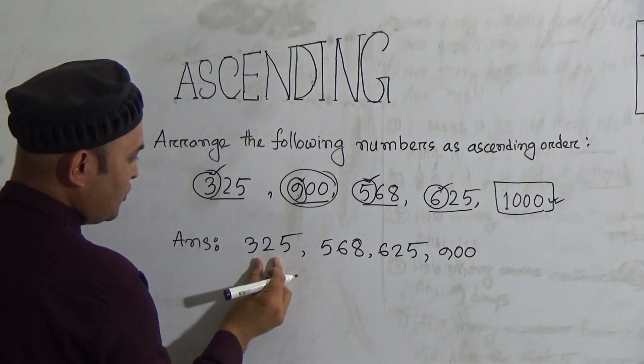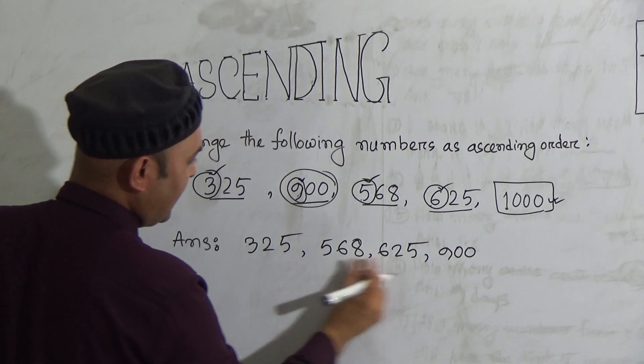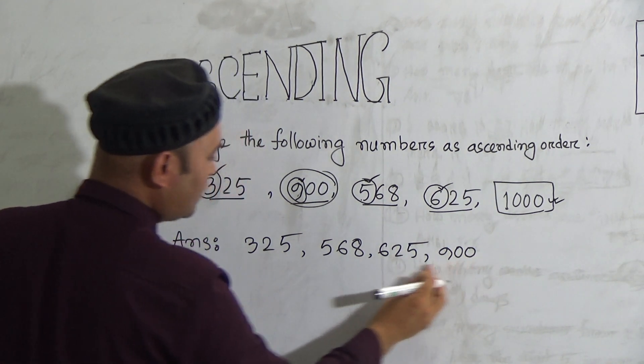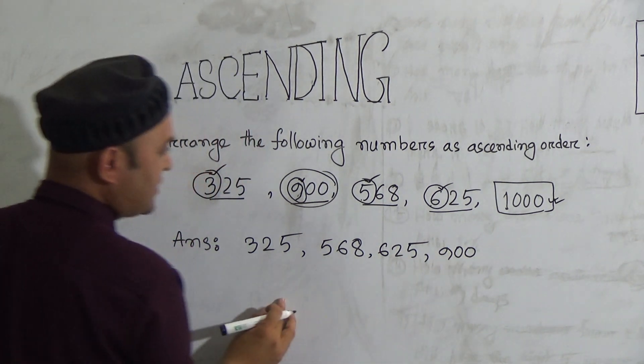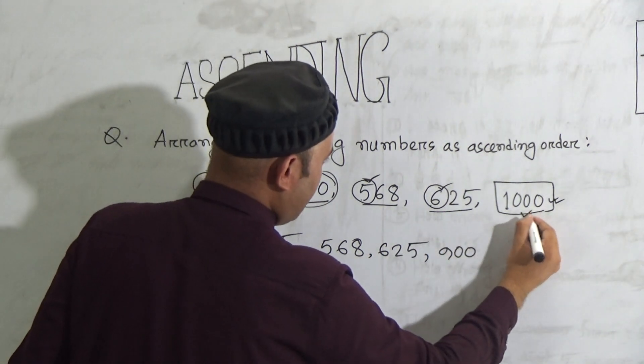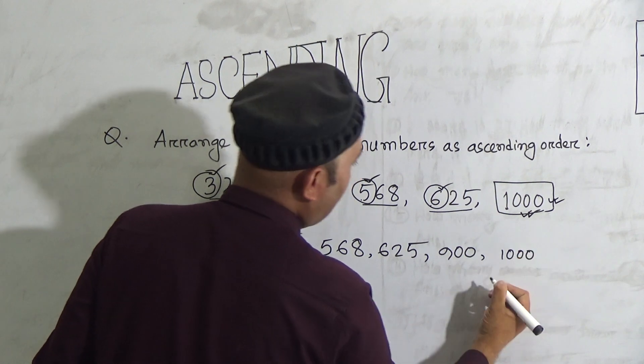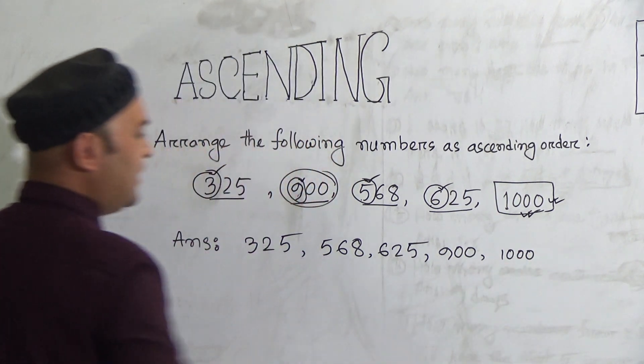And there is remaining 900. 900 is here. So 325, 568, 625, and 900 are all three-digit numbers. And last one, there is the four-digit number, and it will be 1000. 1000 will be the biggest number.